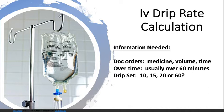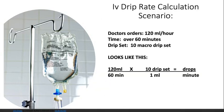Let's talk about what we need to set up the IV drip rate calculation. First, we need the doctor's orders: what type of medicine, how much volume in milliliters, and over how much time the medicine or fluid should be administered. The last thing we need to know is the drip set — what's available at our hospital or clinic. Usually we'll use a 10, 15, or 20 macro drip set; we probably won't use a 60 because it would take a really long time to drip in the fluids.